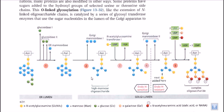For instance, one kind of signaling chain will give a signal to the protein to target the mitochondria, for example. In another case, a different type of signaling chain will help it target the cell membrane. So this kind of signaling can be done via the presence of these oligosaccharide moieties.